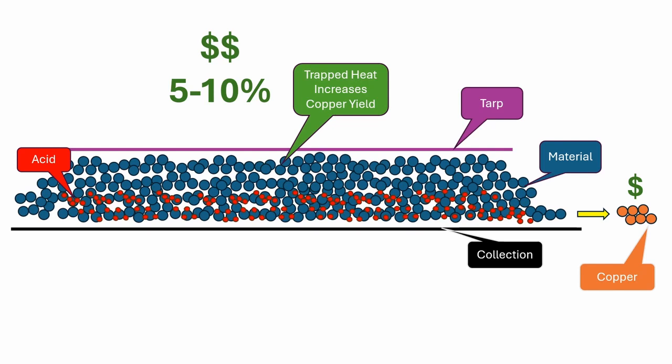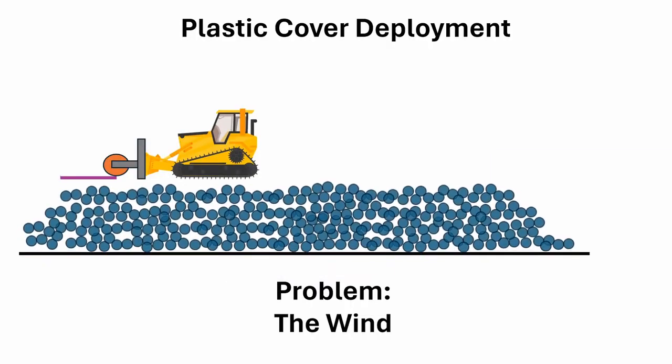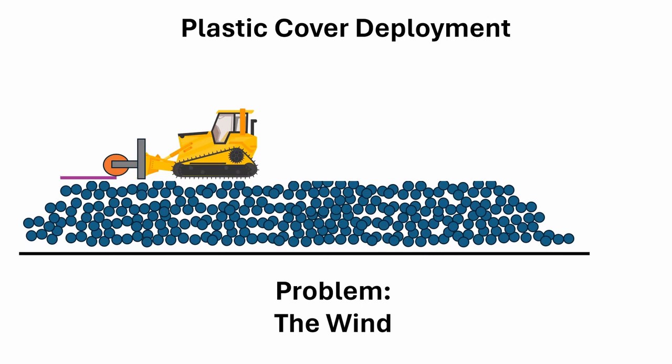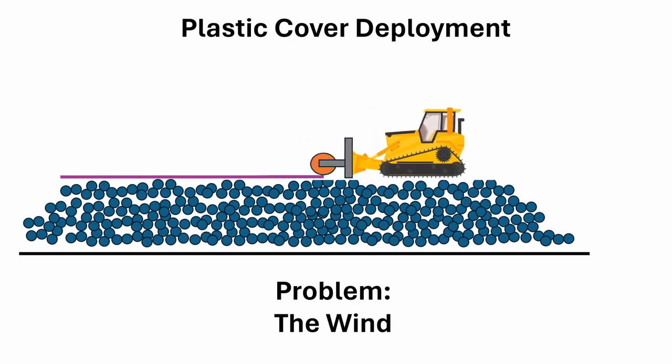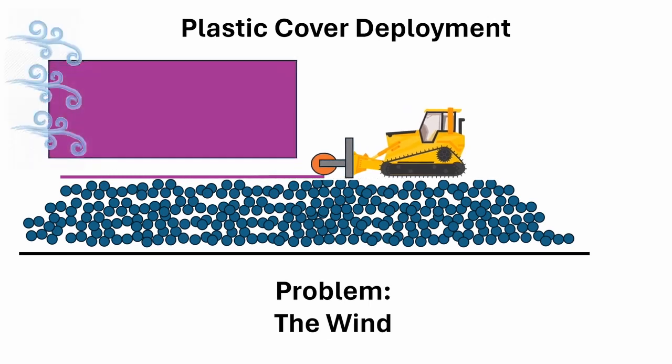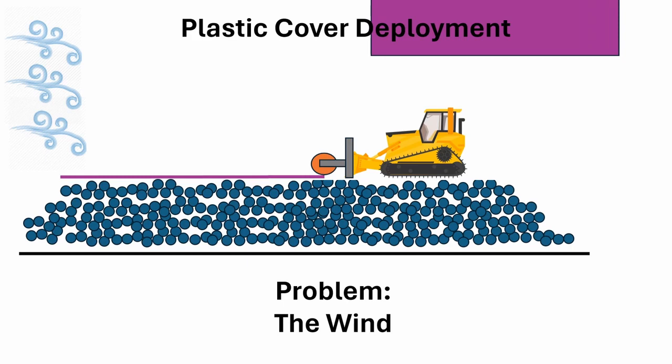During the installation process, the plastic covers are rolled onto the material pads with the plastic unroll fixture, which is attached to and pulled by a bulldozer. During installation, when wind speeds are high enough, the plastic covers blow away, preventing a correct installation.